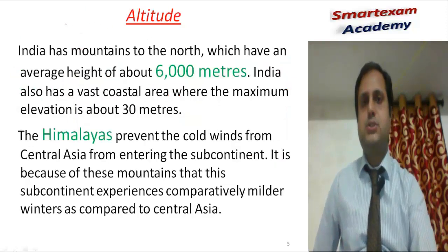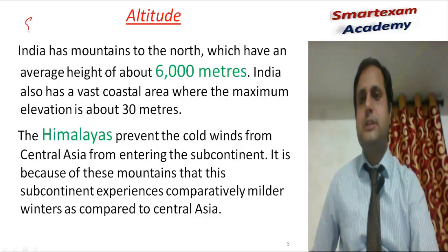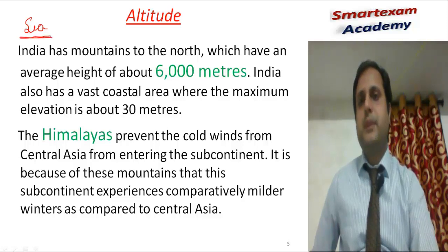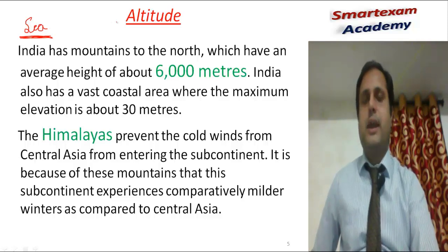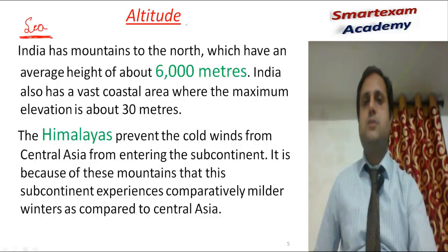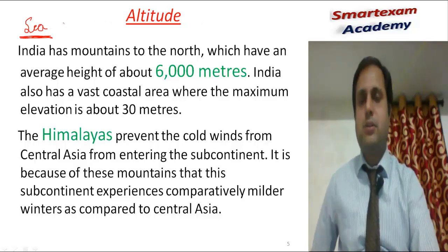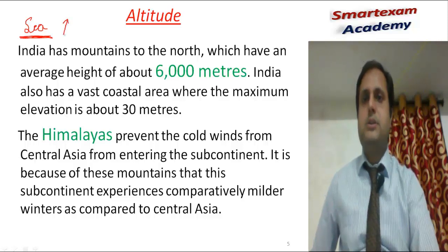Altitude means the height from the sea level. We regard sea level to understand the height of any place because the level of the sea remains the same everywhere. As we increase in height, the temperature decreases. A question arises: why is Jaipur hotter?